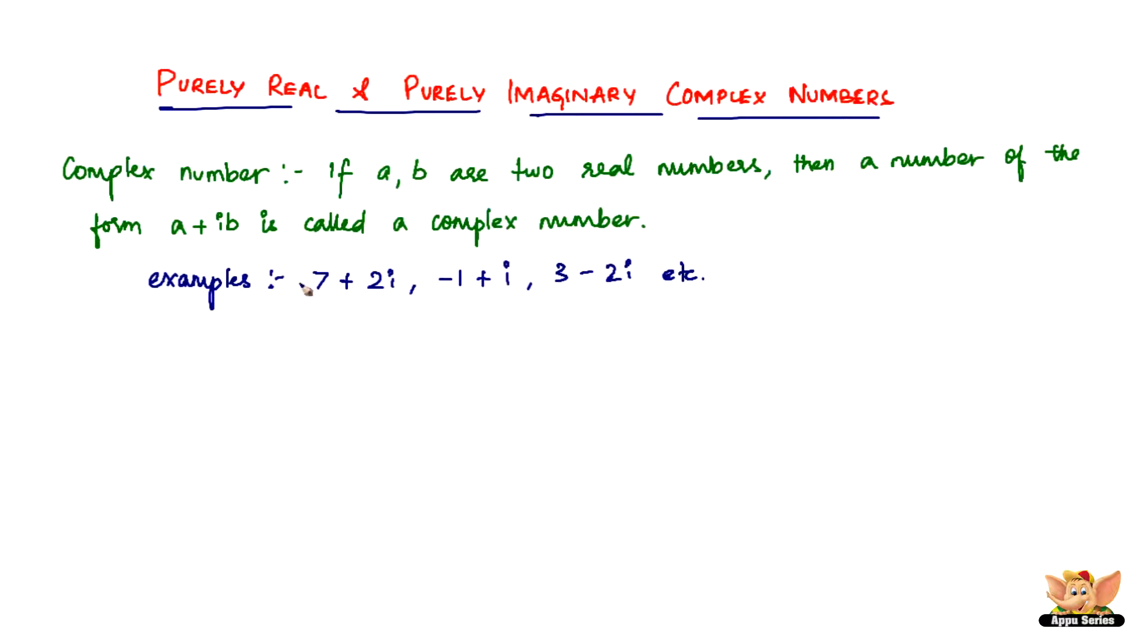All right, here we have a definition and few examples for what is a complex number. So, complex number is nothing but if a, b are two real numbers, then a number of the form a plus ib is called a complex number. Few examples are 7 plus 2i, where a is 7 and b is 2 and i is just i, the imaginary part. And then we've got another example minus 1 plus i, 3 minus 2i and you can write a lot more examples like this.